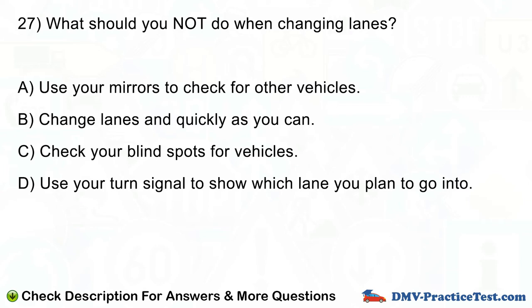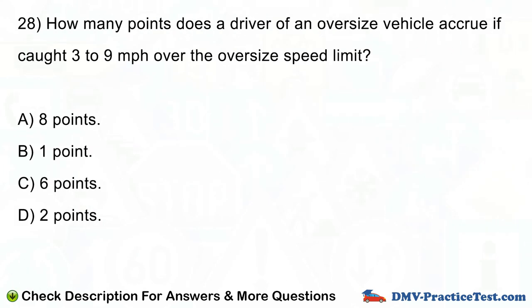Question number 28. How many points does the driver of an oversize vehicle accrue if caught 3 to 9 mph over the oversize speed limit? A. 8 points. B. 1 point. C. 6 points. D. 2 points.